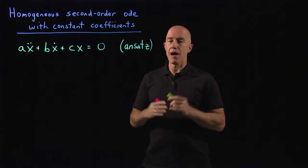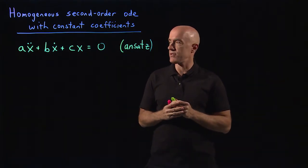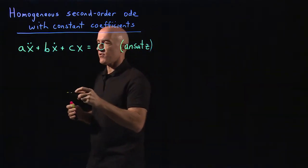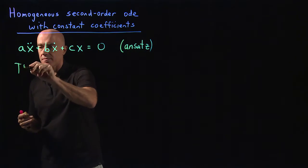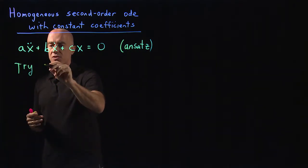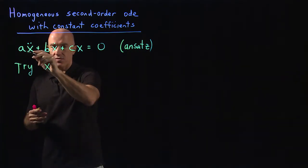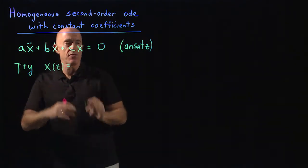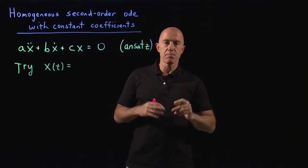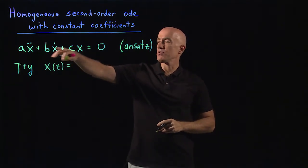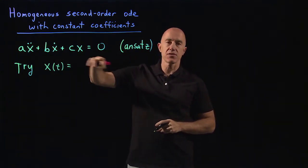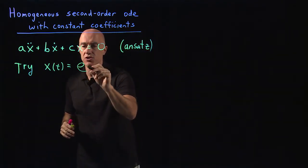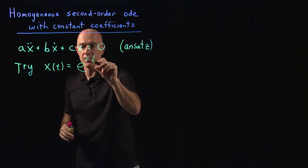So the proper Ansatz here will be an exponential function. We can see how it works. But where does the free parameter go? If we put the free parameter as a multiplying constant, that multiplying constant will just cancel. It won't do us any good. So the free parameter here actually should go in the exponential function.